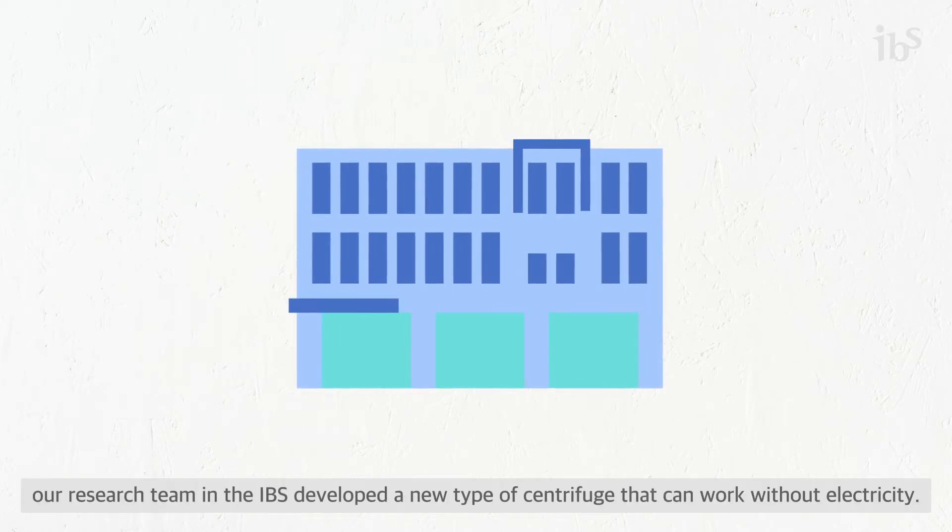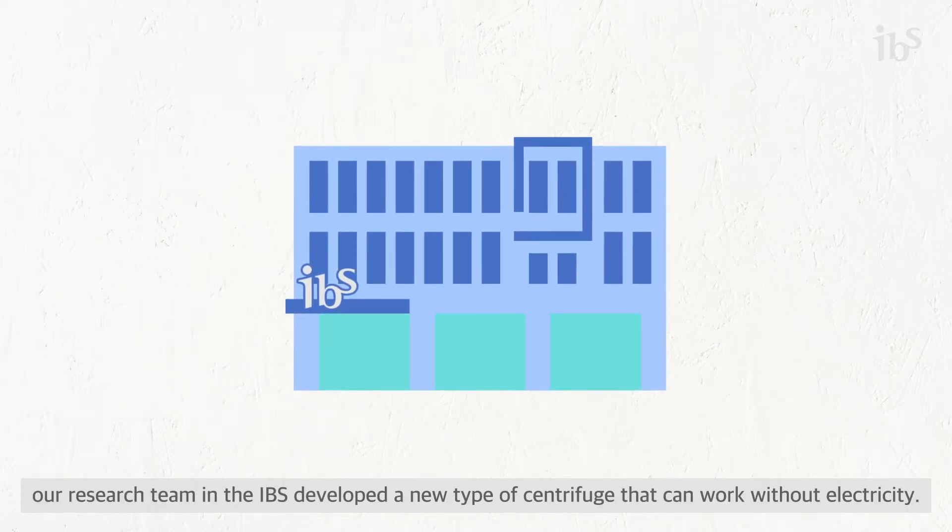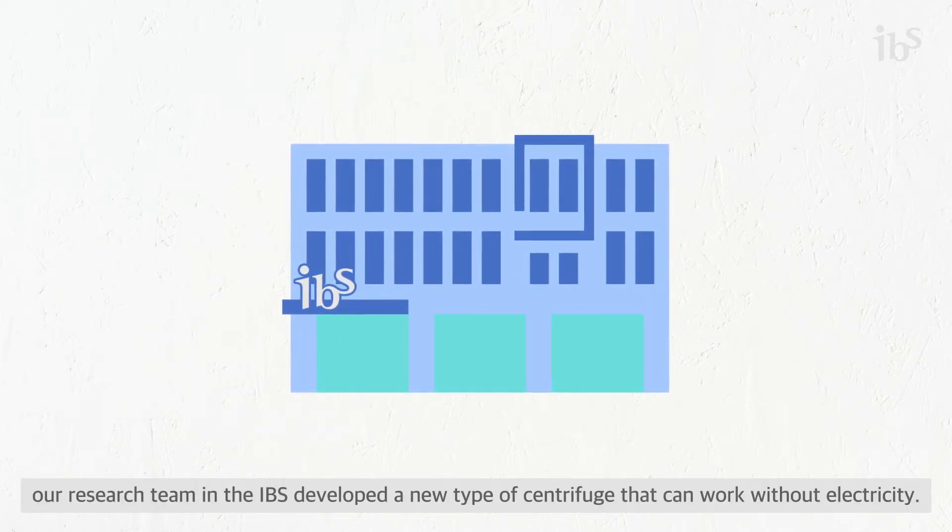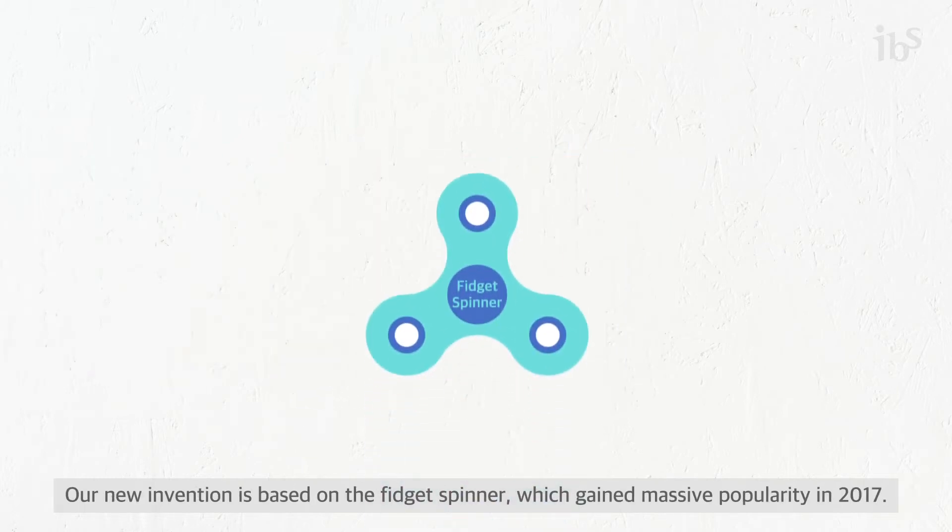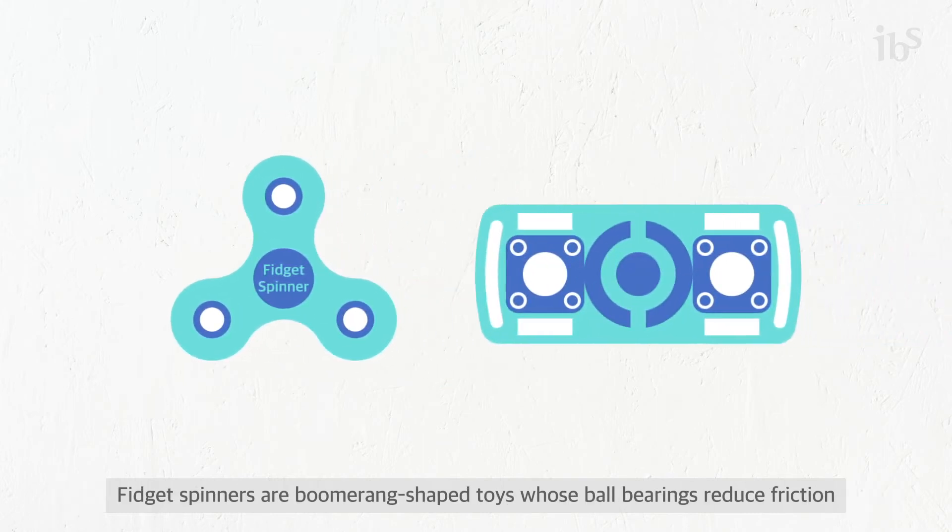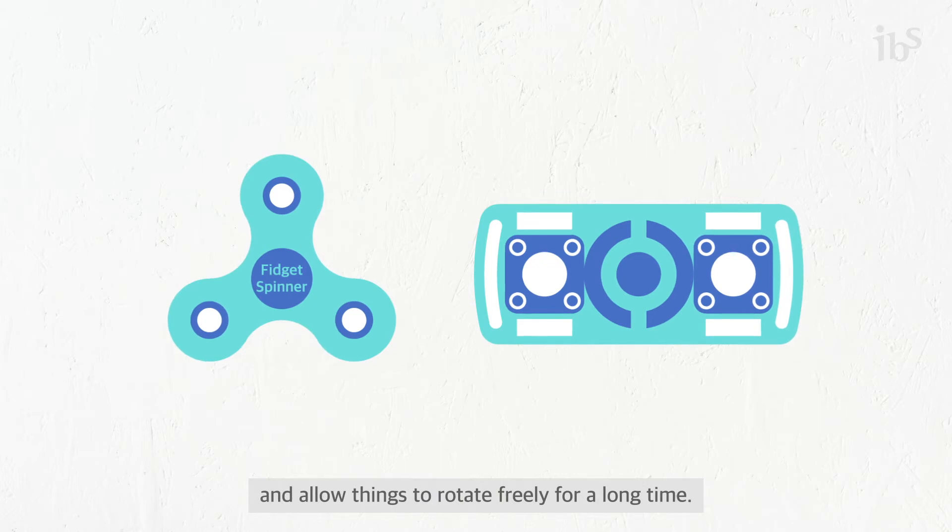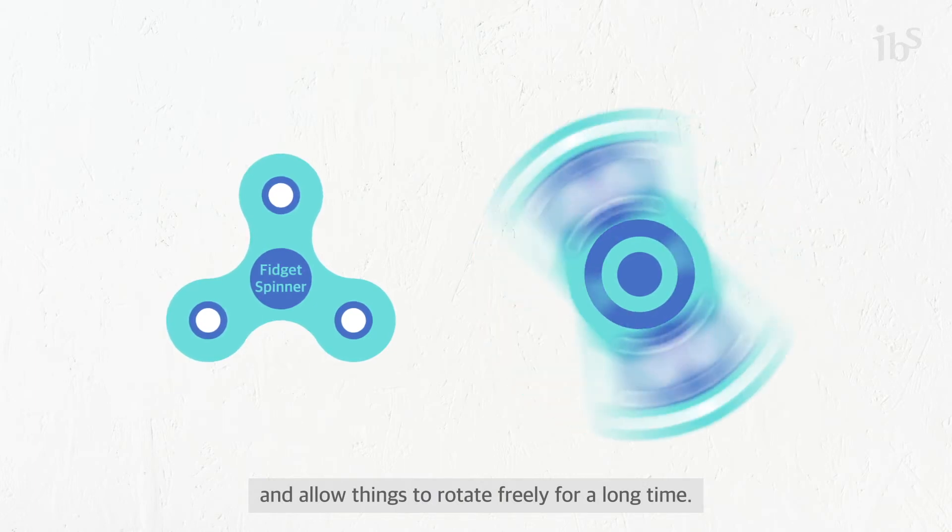In order to address this problem, our research team at the IBS developed a new type of centrifuge that can work without electricity. Our new invention is based on the fidget spinner, which gained massive popularity in 2017. Fidget spinners are boomerang-shaped toys whose ball bearings reduce friction and allow things to rotate freely for a long time.